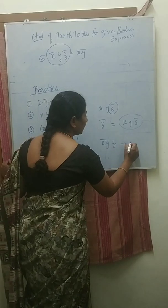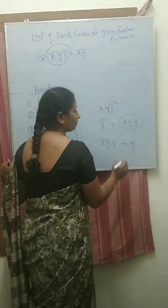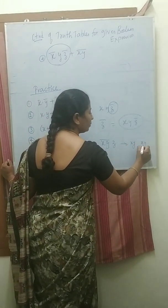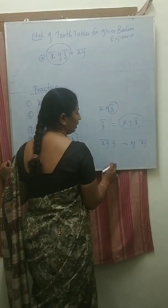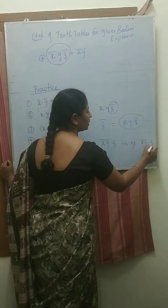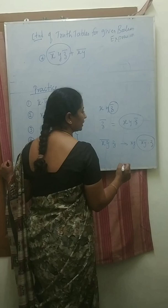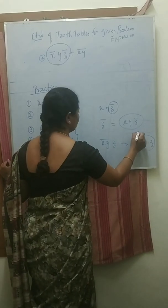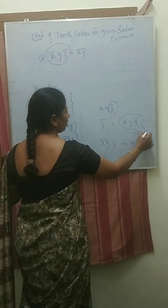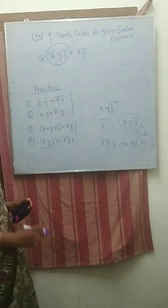First find the XY, then do a complement for the XY whole bar. Multiply with the Z, then you will get the complete result. Then these two add.